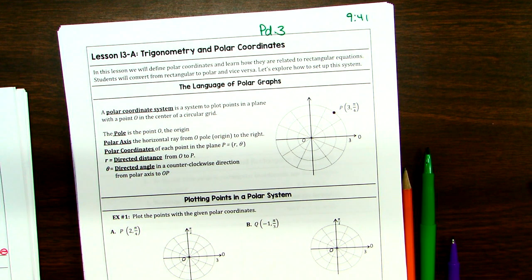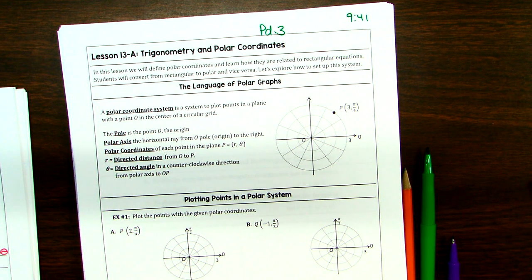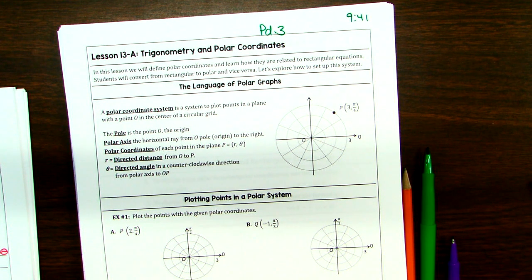We've graphed rectangular coordinates — the regular old graph you've worked with your whole life, the x-axis and y-axis. We call that the rectangular coordinate plane. When I'm talking about rectangular, I'm talking about old-fashioned x, y points and that kind of thing.